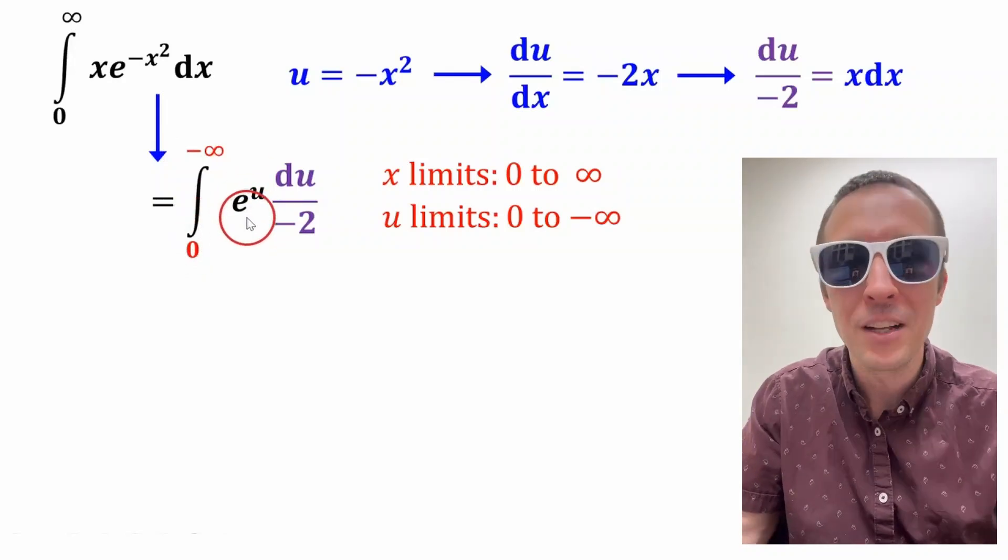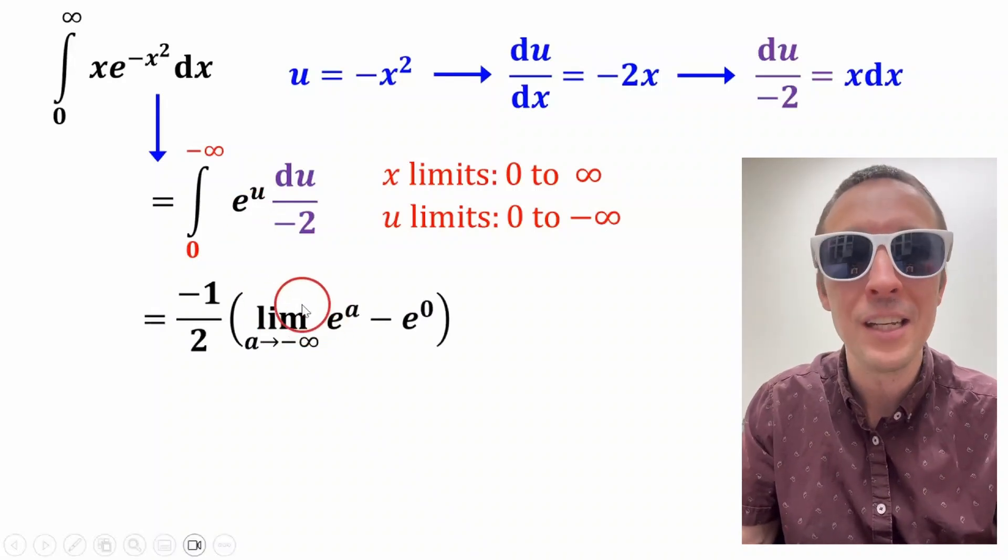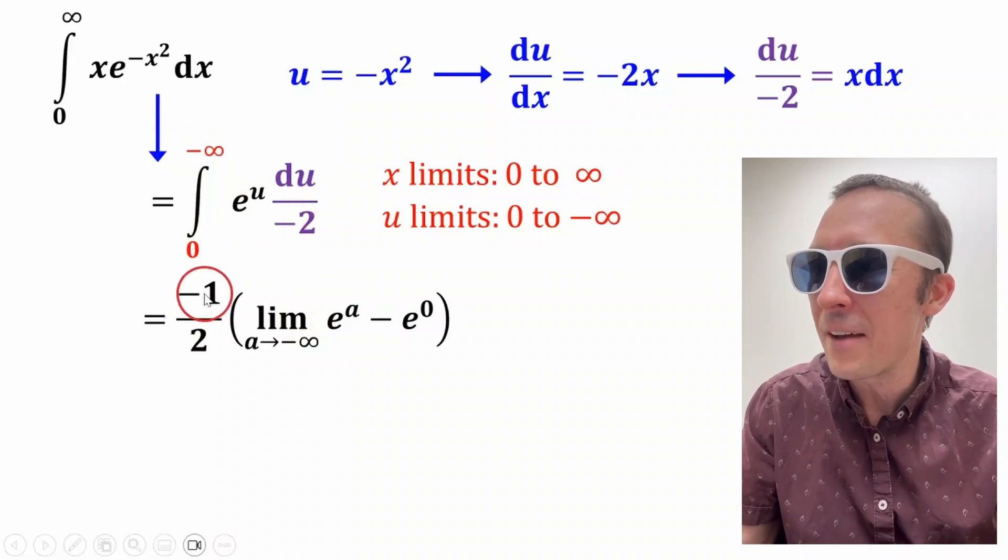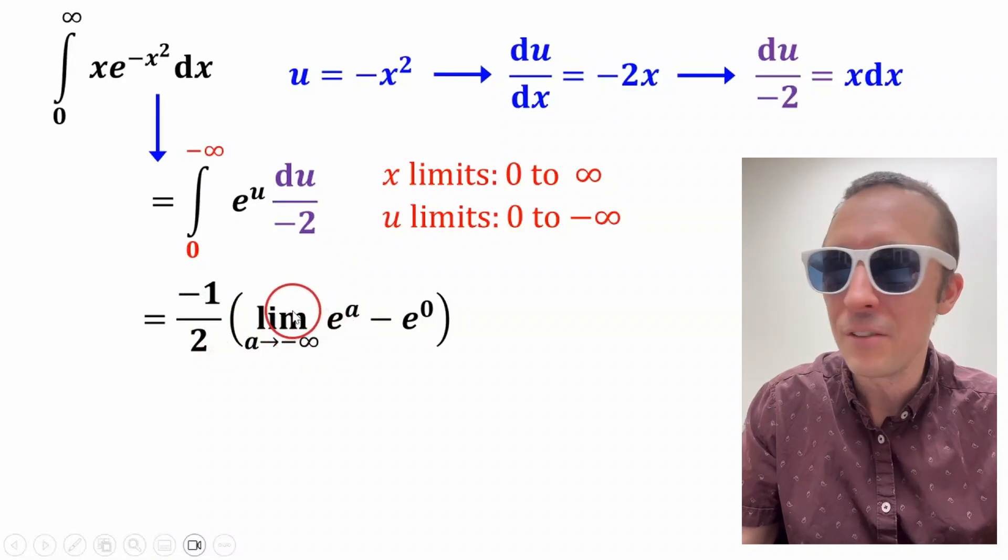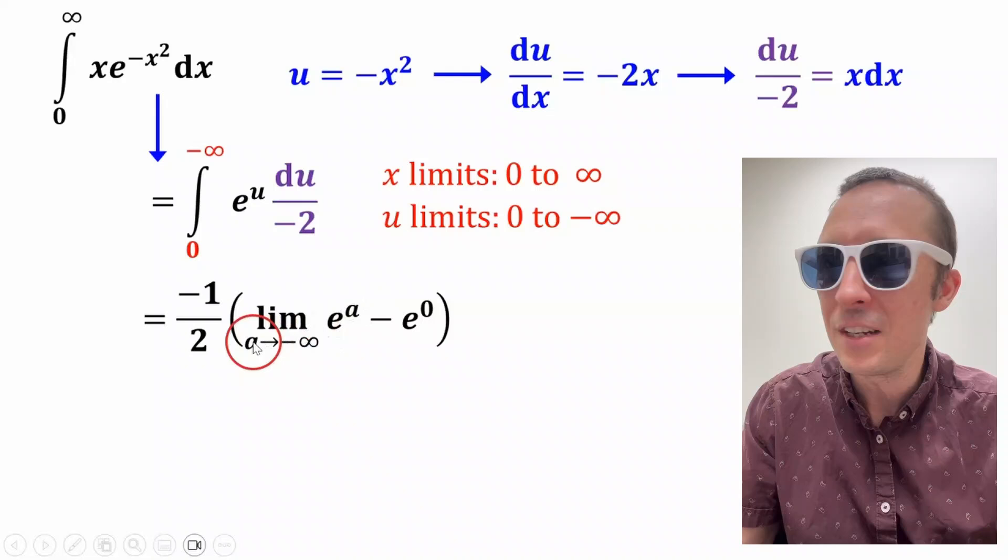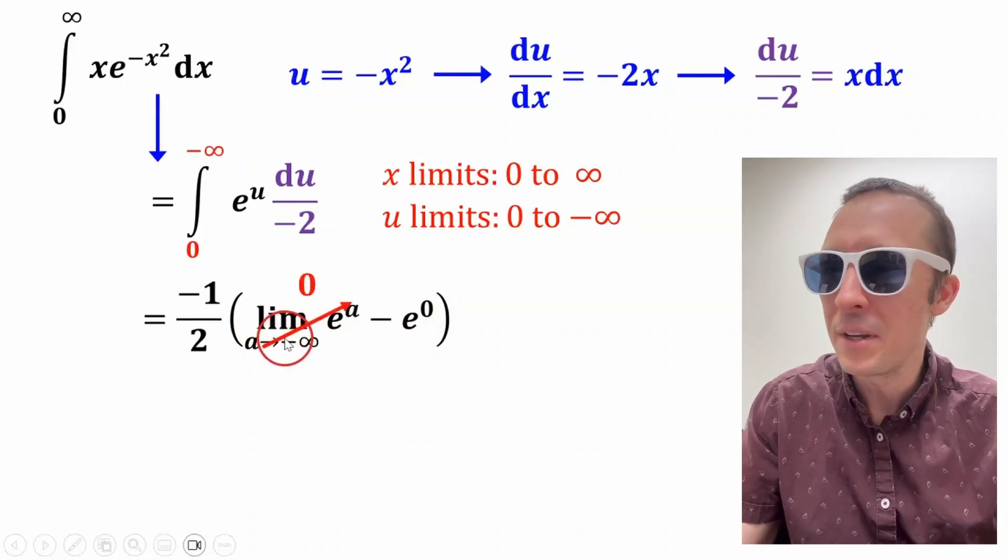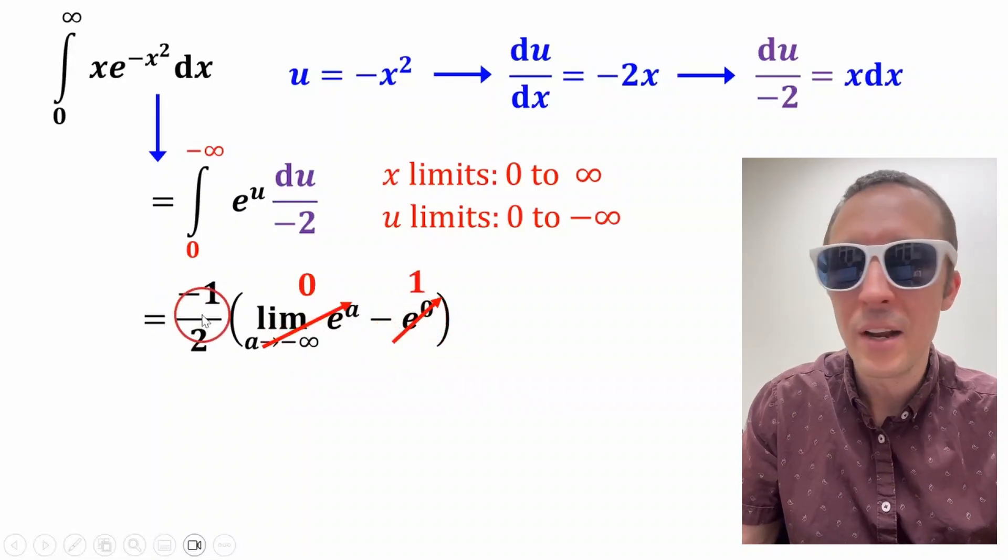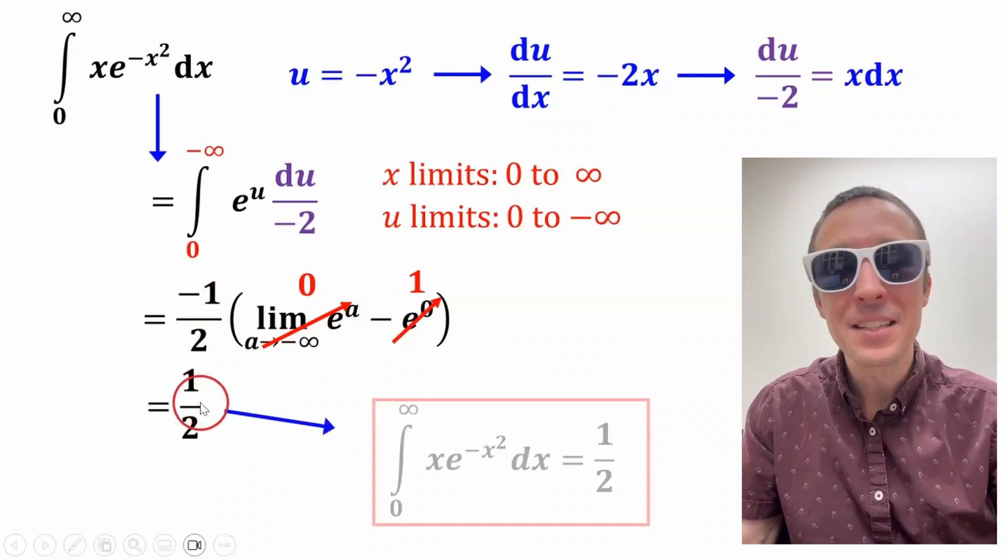And at this point, my friends, this is an easy integral because the integral of e to the u is literally e to the u itself. So this negative one half gets yanked out of the integral. And we're evaluating the integral of e to the u from zero to negative infinity. So we'll set it up as a limit. And the limit term becomes zero. The e to the zero term just becomes one. And if we simplify this, these negatives cancel. So that's literally our integral.